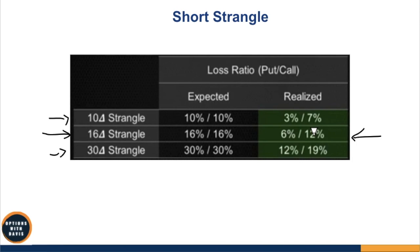But in reality, it actually breaches much less than that. On the put side, it only breaches 6% of the time. On the call side, only 12% of the time. It's similar across 10 delta and 30 delta strikes as well. The breach tends to be more often on the call side because we have been in a bull market for the longest time — the stock market has just kept going higher and higher. But overall, it's still much lesser than the theoretical expected move.